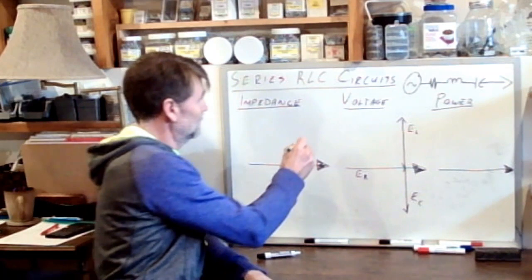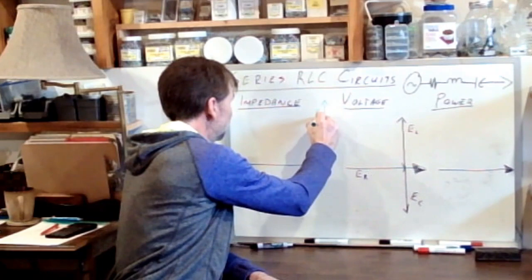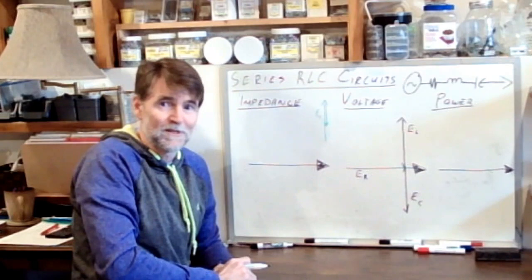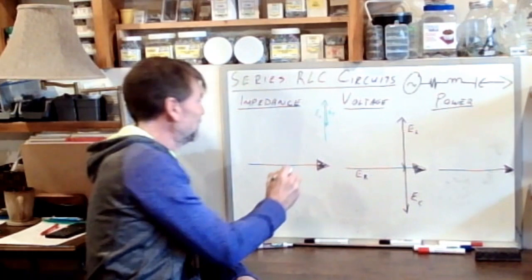Let me just grab a different color. I'm going to throw it in here. We'll erase it right away. So here's EL, and placed tip to tail with that is EC, we're going to put it right here, and it's exactly out of phase by 180 degrees, which means it's pointing back in the other direction. That's EC.